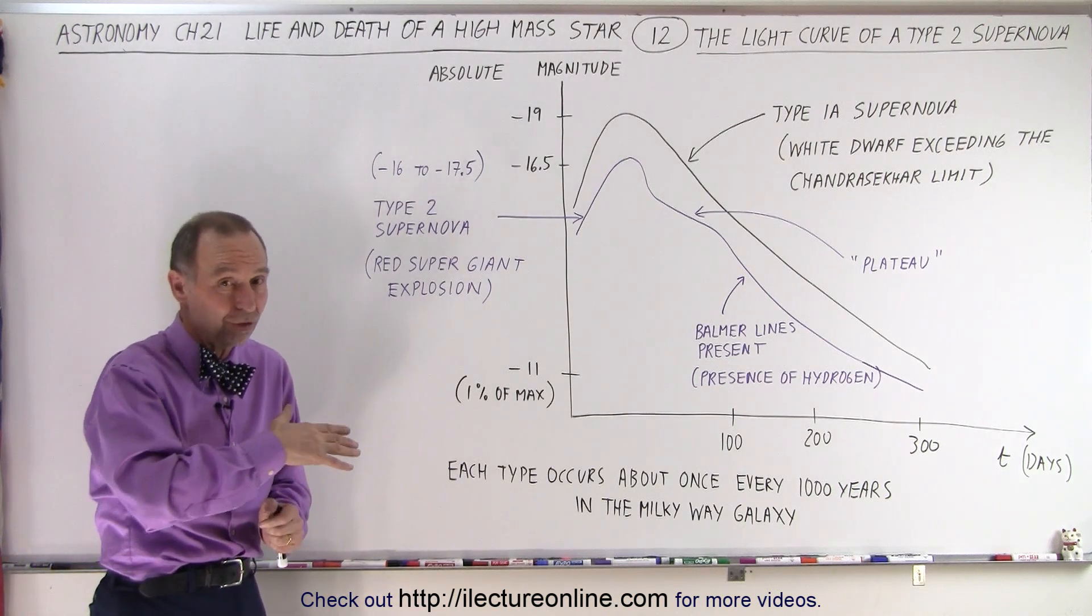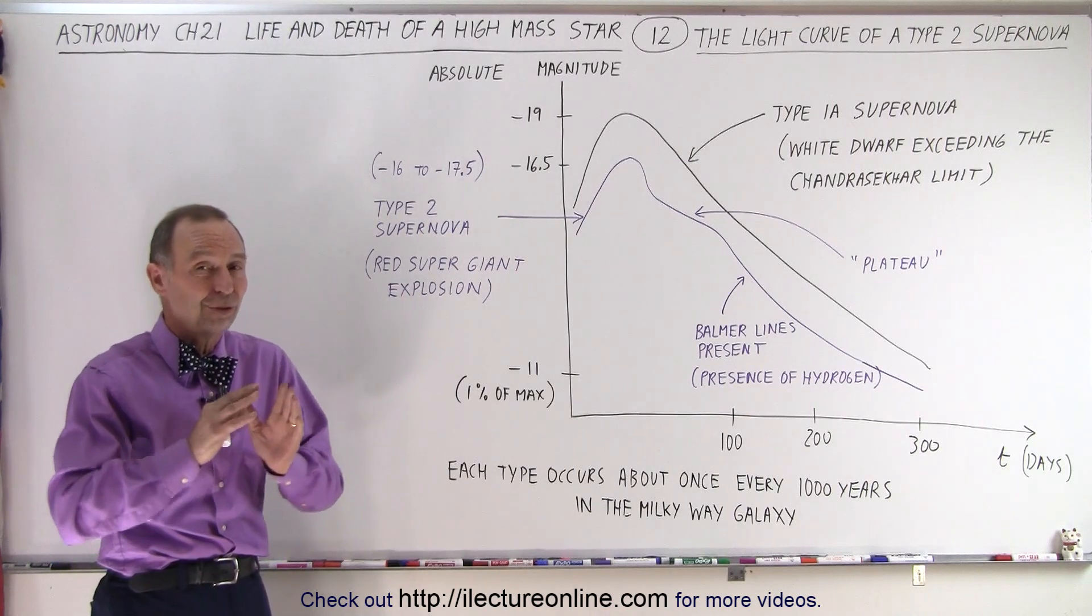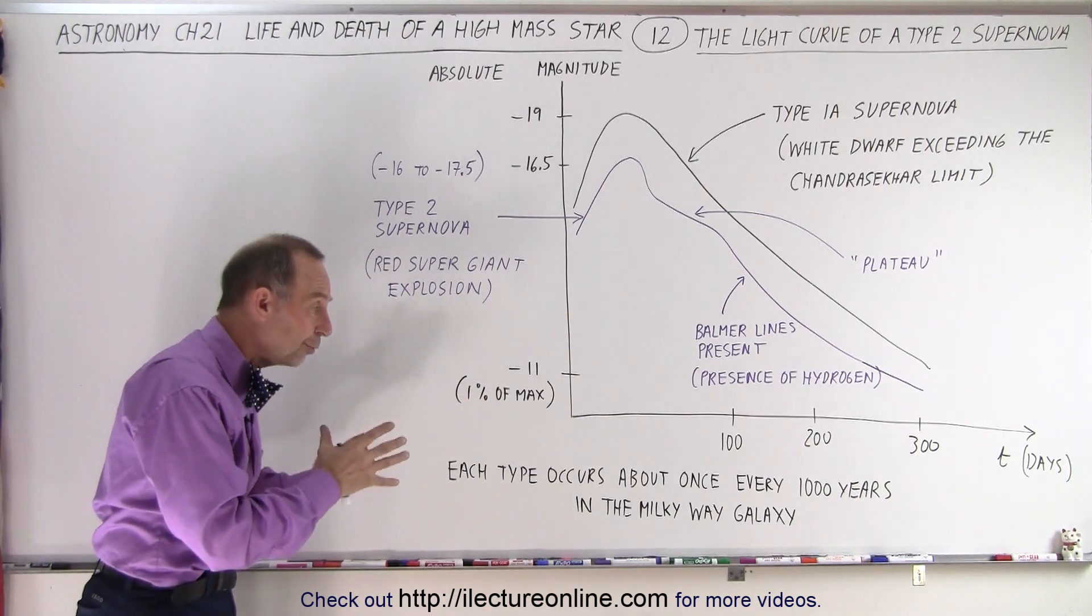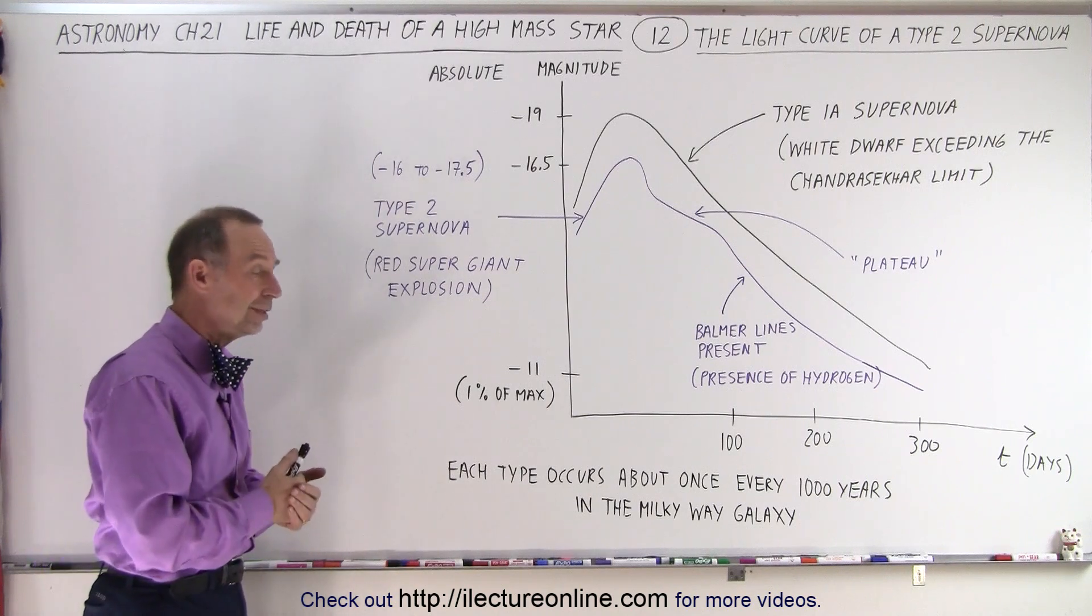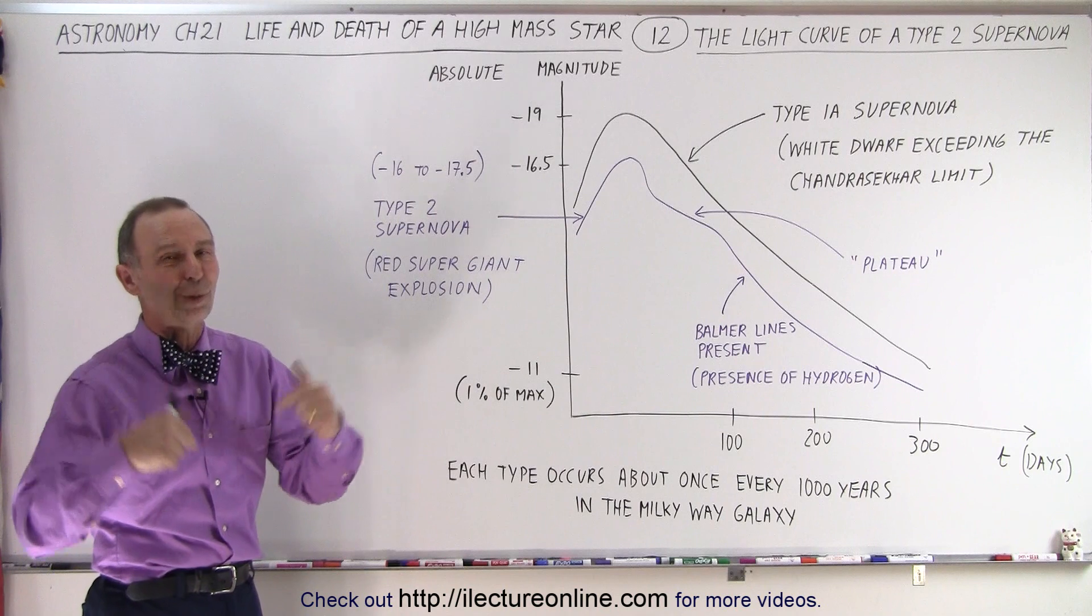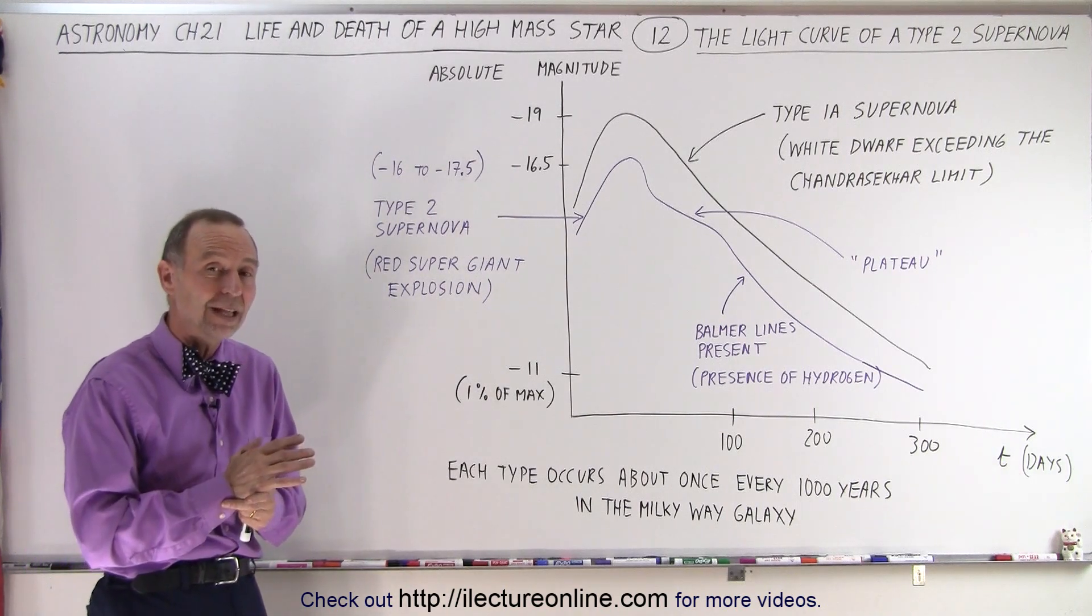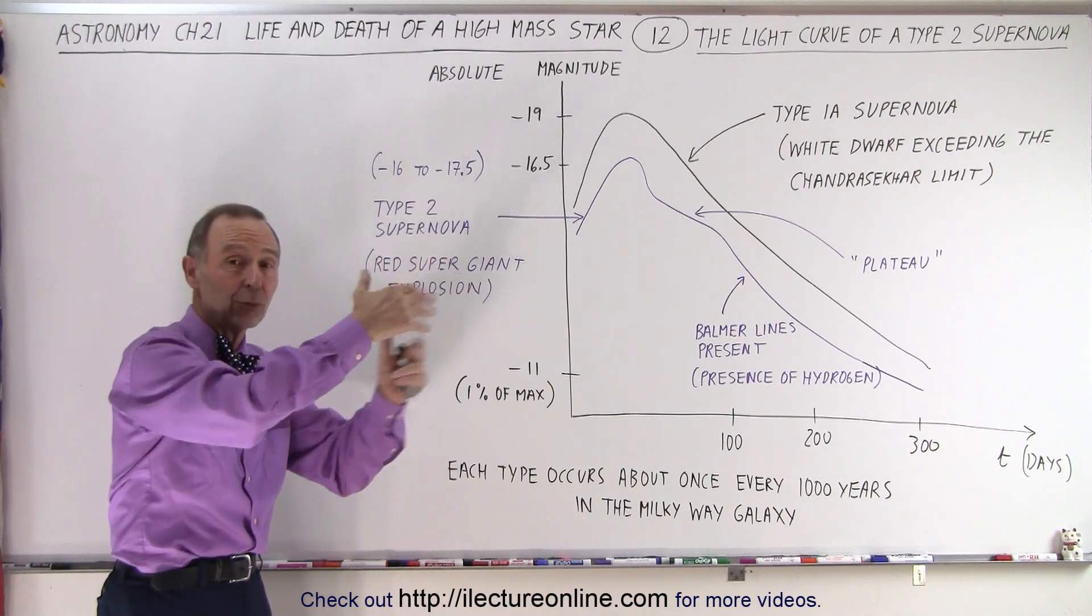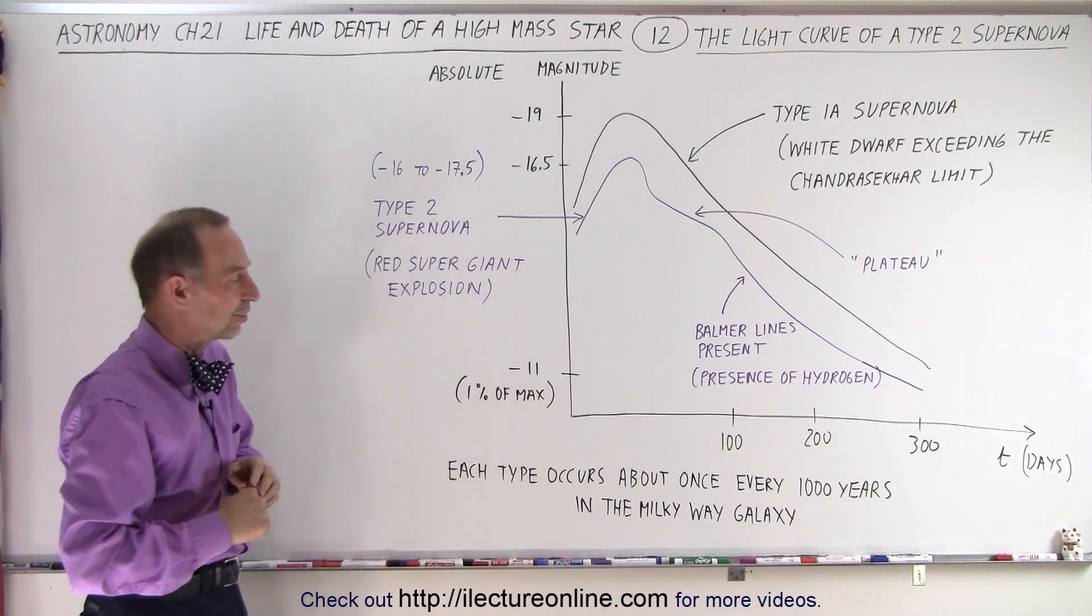Now of course since there is billions of galaxies out there we see Type 1a and Type 2 supernovas all the time in all the galaxies around us. But for our own galaxy they are rather rare and if you haven't seen one well you may have to wait a long time before you get to see another one within our own galaxy. The last one that we did see was in 1987 that was the supernova explosion that occurred in the large Magellanic cloud which was one of our companion galaxies about 170,000 light years away.